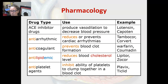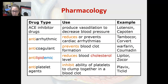An anti-arrhythmic reduces or prevents cardiac arrhythmias — examples include Tambocor and Corvert. An anticoagulant prevents blood clot formation, like warfarin and Coumadin, along with many newer ones available.